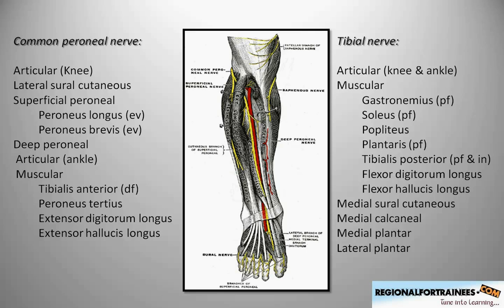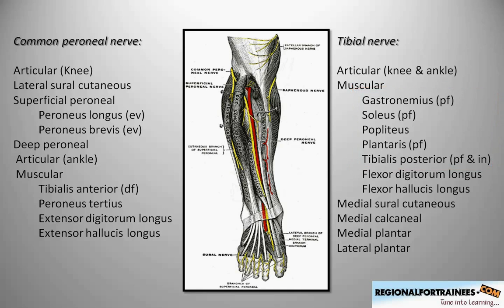The tibial nerve gives articular branches to both the knee and the ankle, and muscular branches to the calf muscles — mainly gastrocnemius, soleus, popliteus, plantaris, and tibialis posterior. These main branches are the plantar flexors of the foot. Additionally, tibialis posterior is also an inverter of the ankle. Other branches include the medial branch to the sural cutaneous nerve, the medial calcaneal nerve, and the medial and lateral plantar nerves.